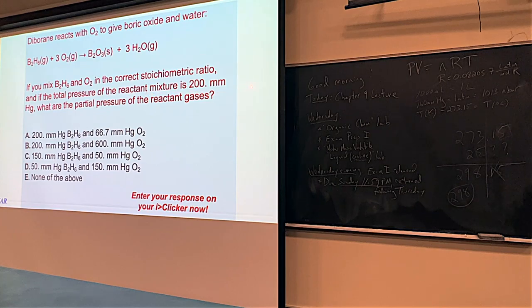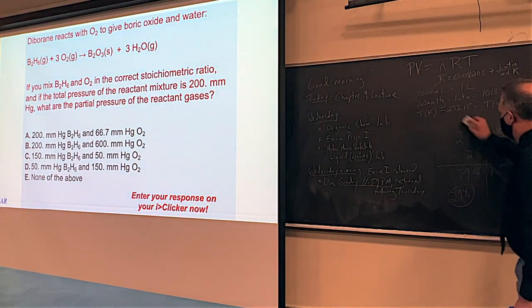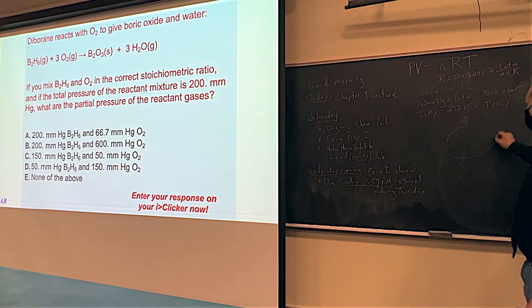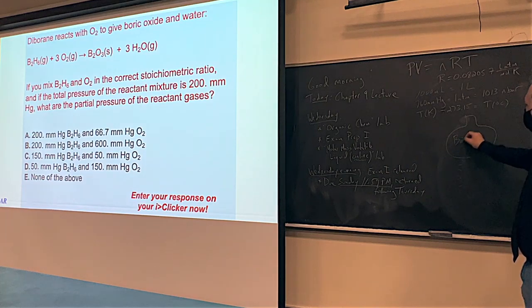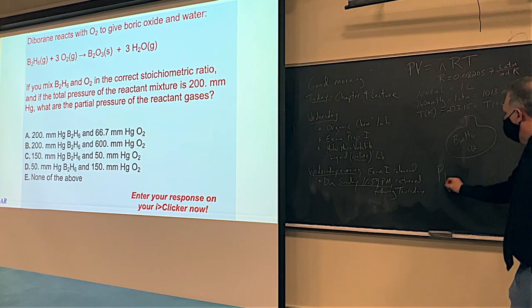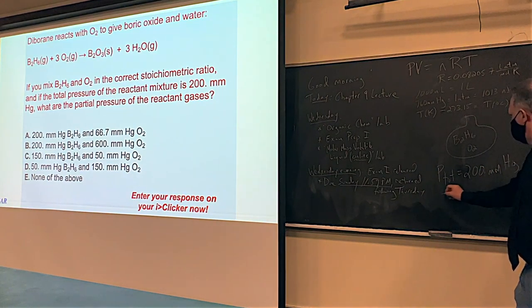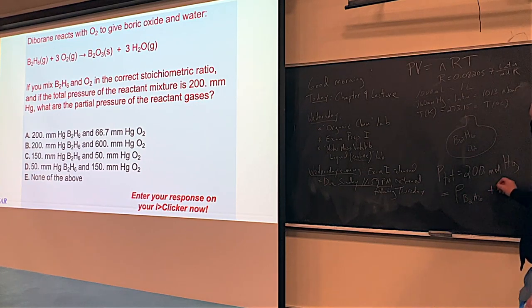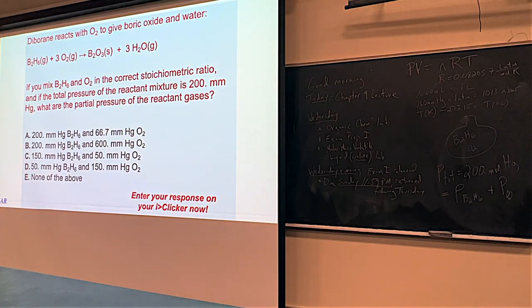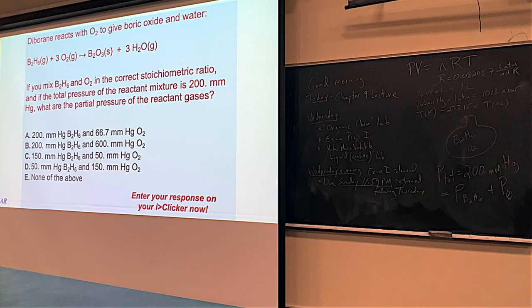The total pressure of the reactant mixture is 200 millimeters of mercury. The question is: what's the partial pressure of each reactant gas? The total pressure equals the pressure of B₂H₆ plus the pressure of O₂. We need to find a combination that gives 200 mmHg while maintaining the 1:3 stoichiometric ratio.